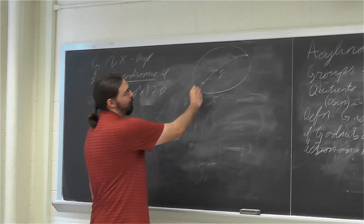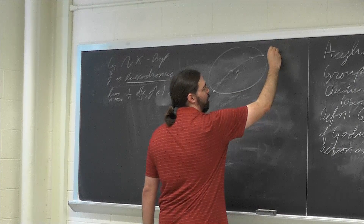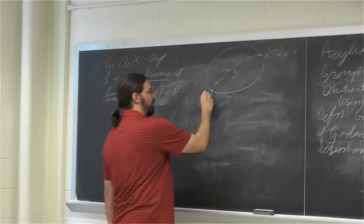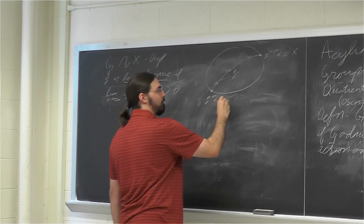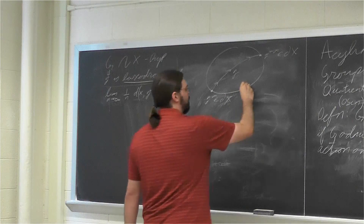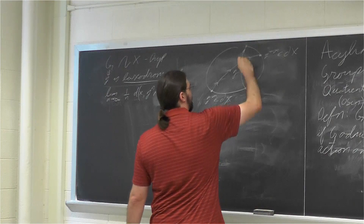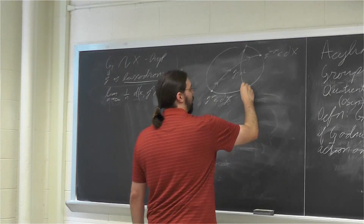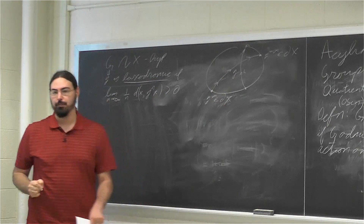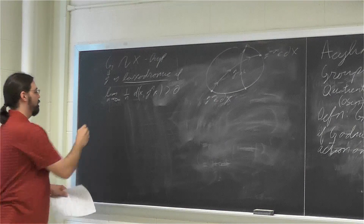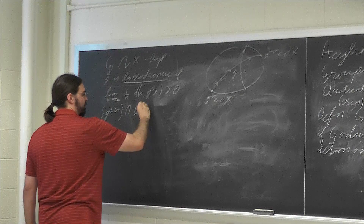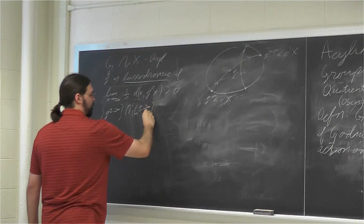If I have a loxodromic element, it has two unique fixed points on the boundary of X, which I'll call g_{-∞} and g_{+∞}. If I have another loxodromic element h, then g and h are called independent if these limit points on the boundary are all distinct — that is, if {g_{±∞}} intersect {h_{±∞}} is empty.